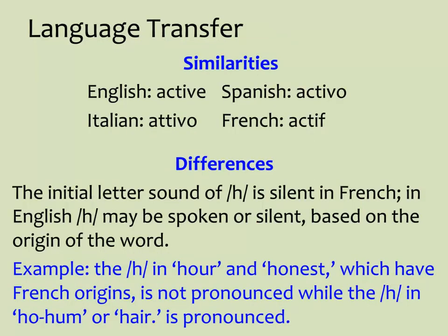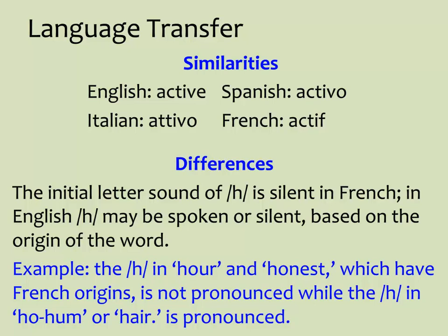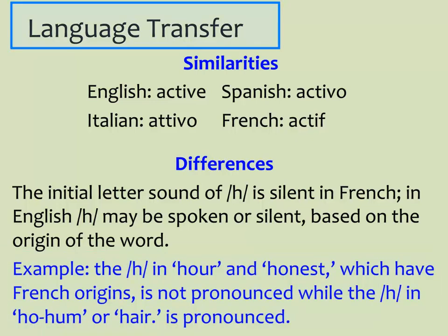When individuals are learning a second language, they naturally look for similarities and differences between their first and second languages. Sometimes this is beneficial, such as when words are similar — for example, active, activo. At other times, this causes errors, such as mispronunciation of words — for example, the sometimes silent H in 'hour' or 'honest.' Using knowledge about one language to try to function in a second language is called language transfer.